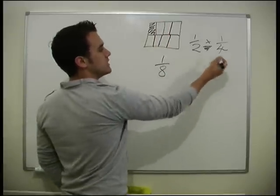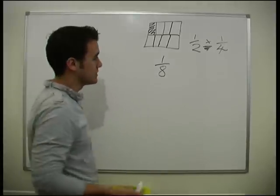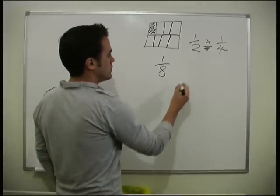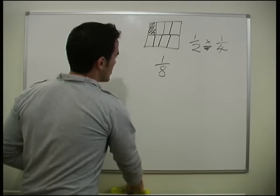All you do is times all the numbers together this time. So it really is straightforward. Let's look at a couple of examples.